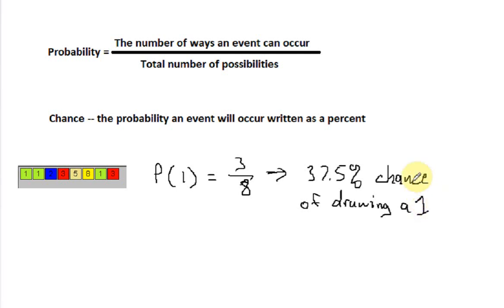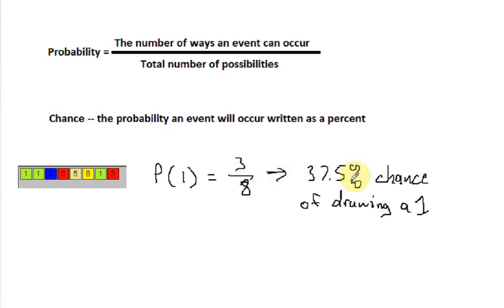So they're very much related. To find the chance, you first of all have to find the probability. Once you find your probability of your event, you can just turn your fraction into a decimal to determine the chance of your event.